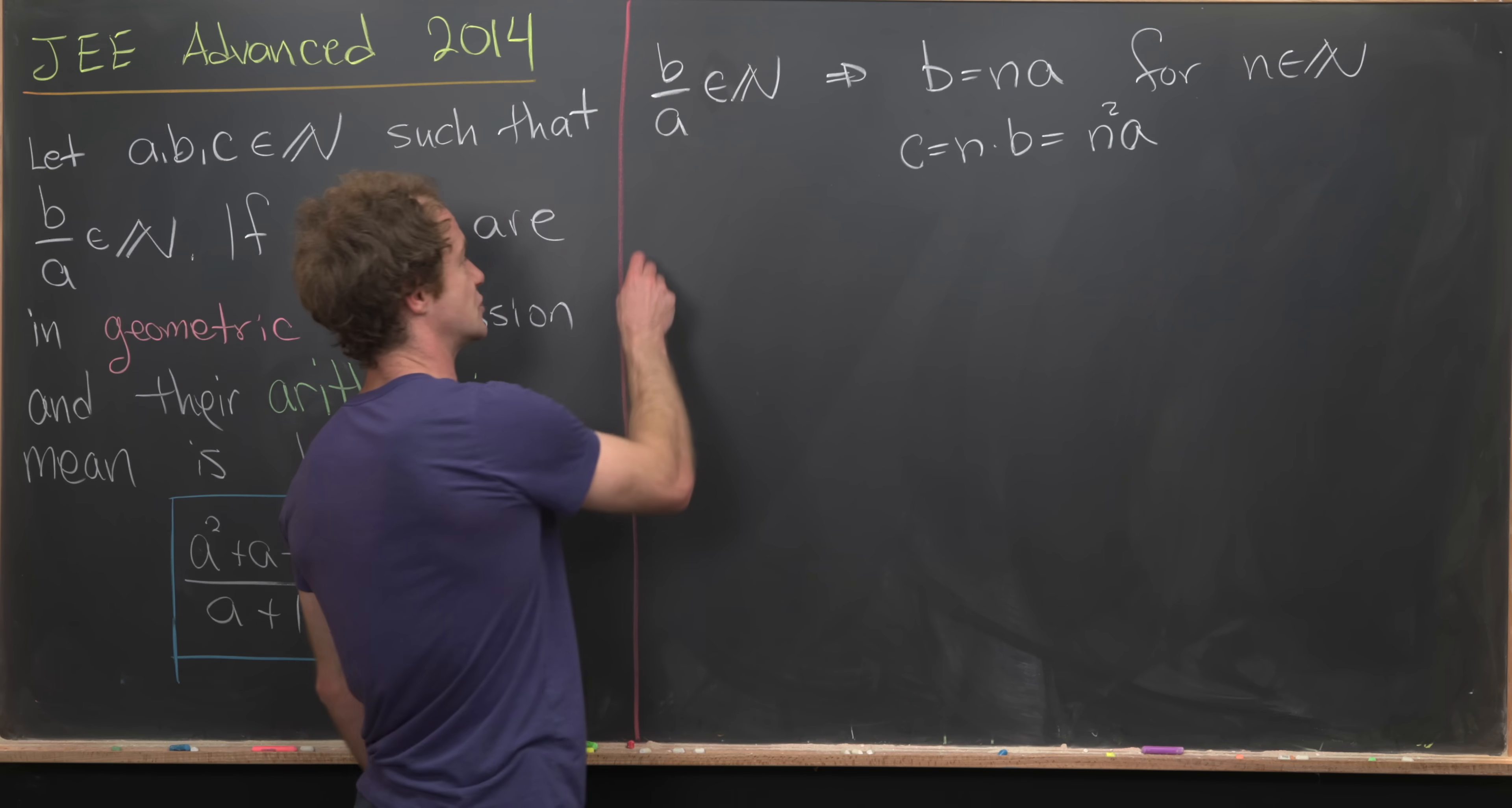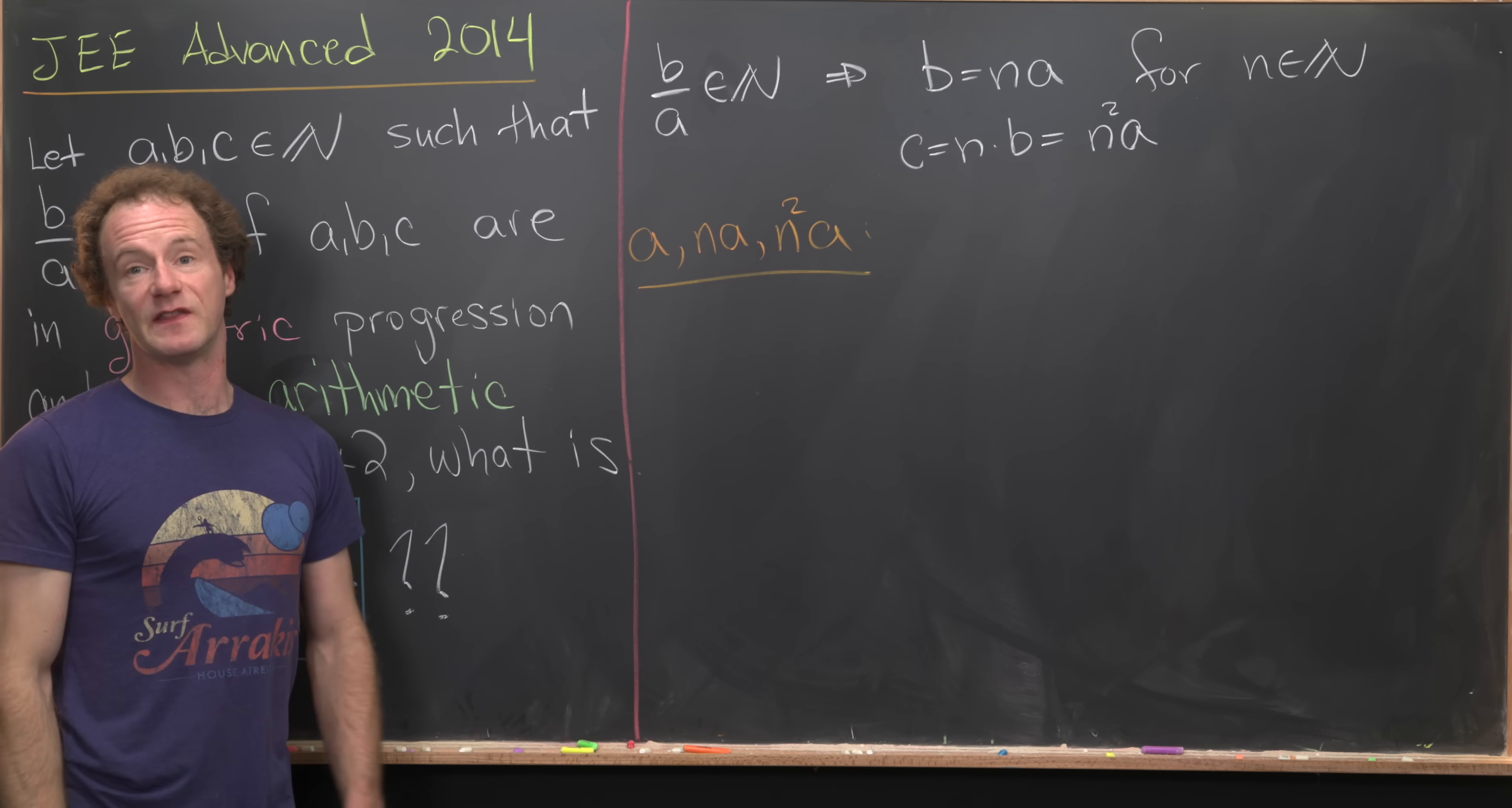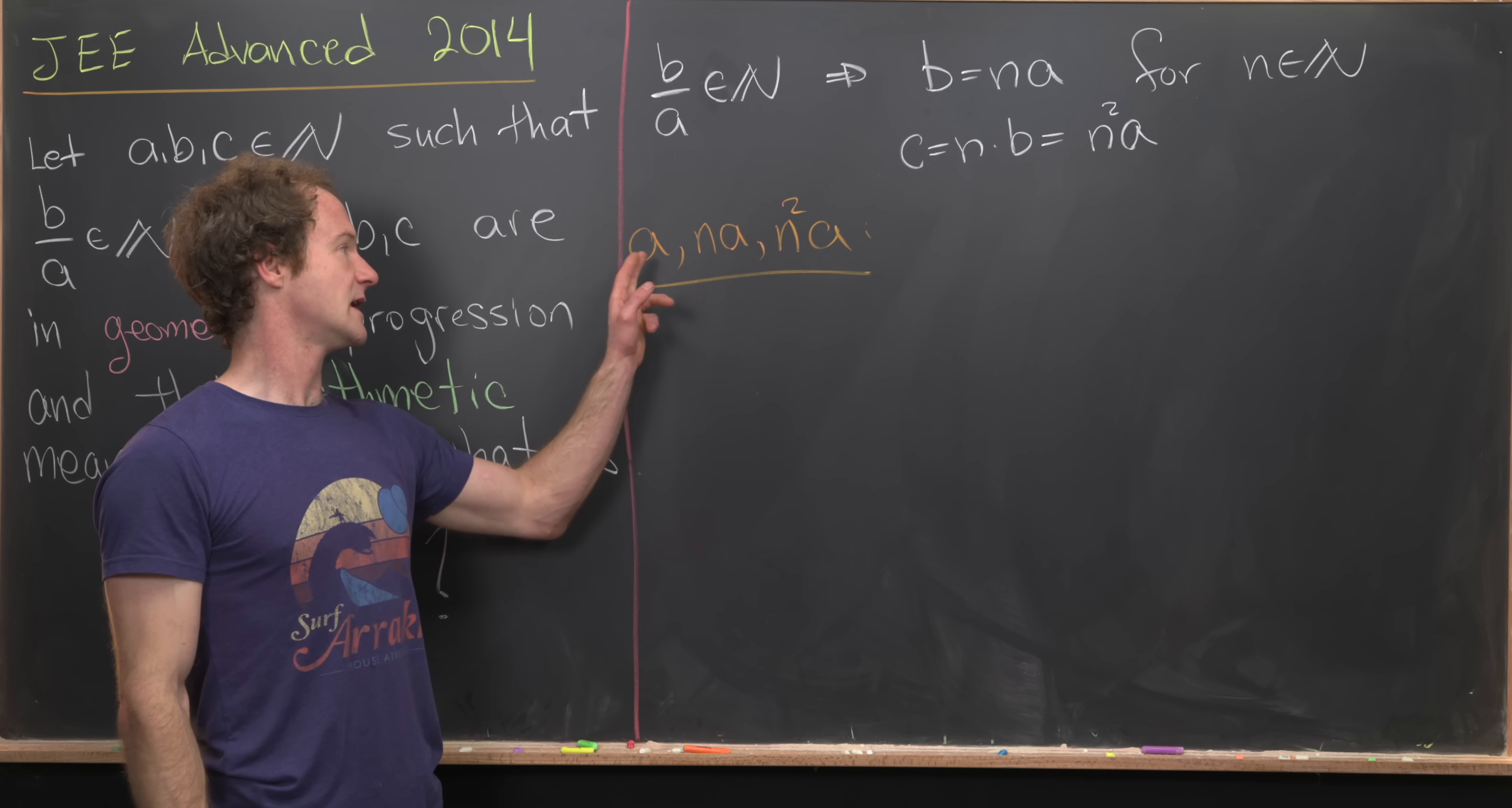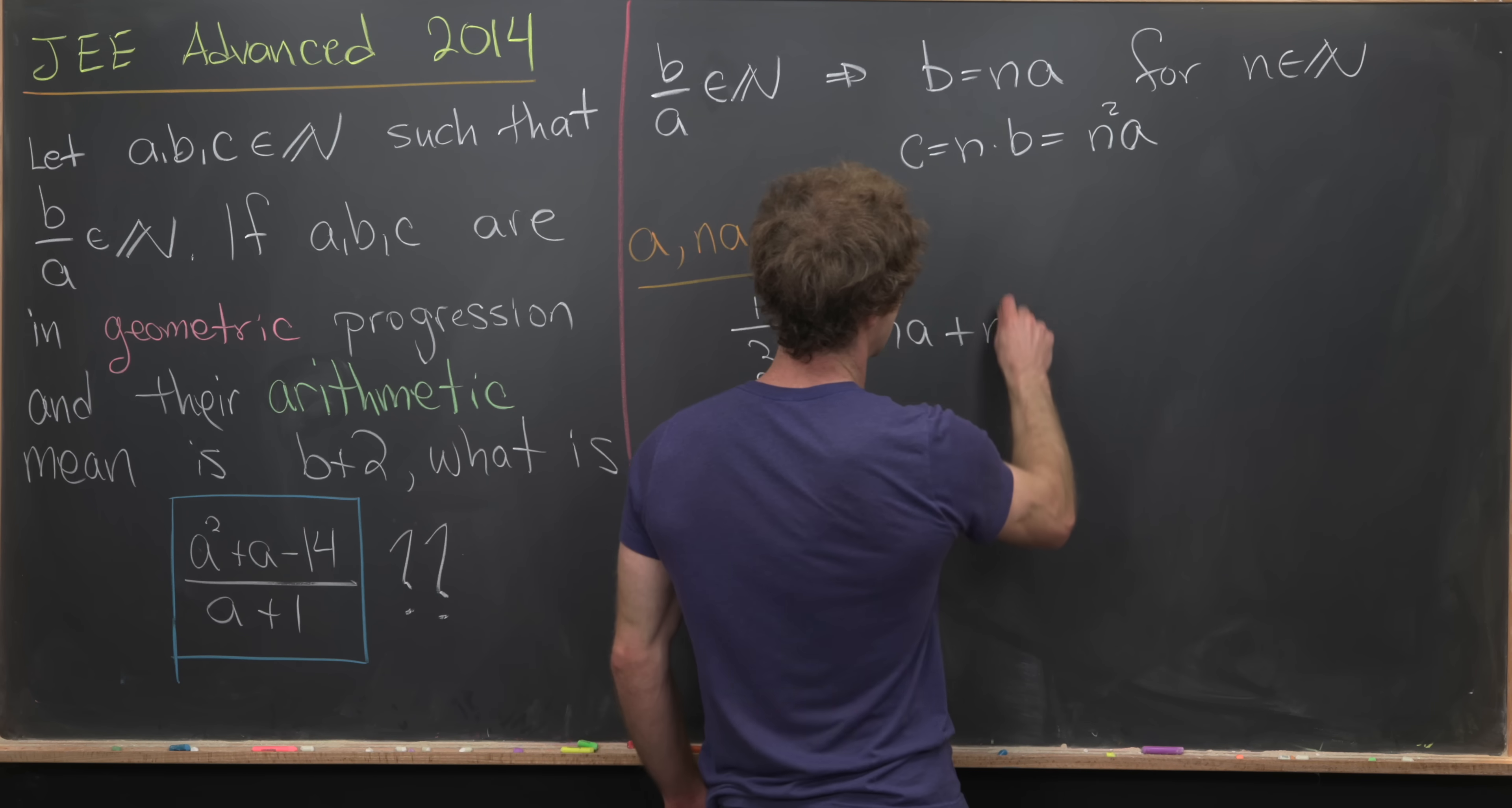We've got a value for A, which we'll just call A. We've got a value for B, which is N times A. And we've got a value for C, which is N squared times A. Now we want to find the arithmetic mean of A, B, and C. But obviously we'll use these values A, NA, and N squared A. And so the arithmetic mean of those will be 1 third A plus NA plus N squared A.